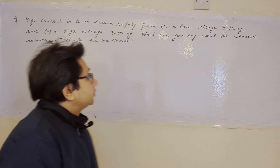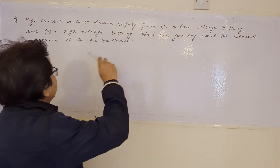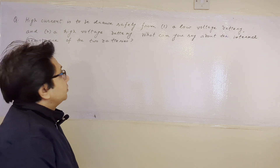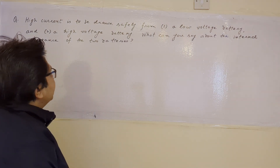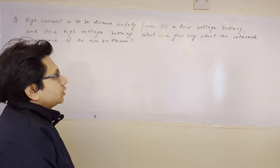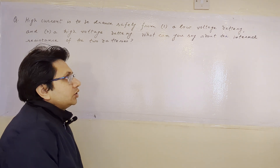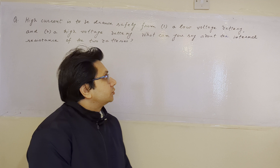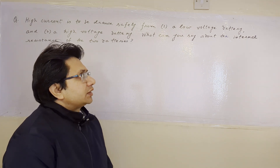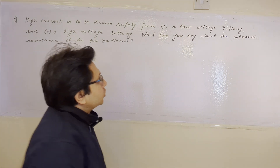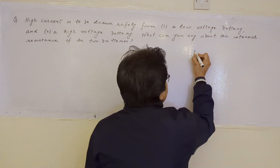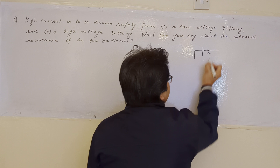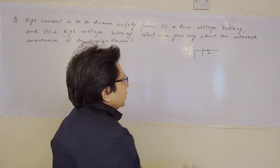Hello students. The question is: high current is to be drawn safely from Part 1, a low voltage battery, and Part 2, a high voltage battery. What can you say about the internal resistance of the two batteries? This problem is based on the topic of basic circuits, or current electricity. Any battery has some internal resistance.